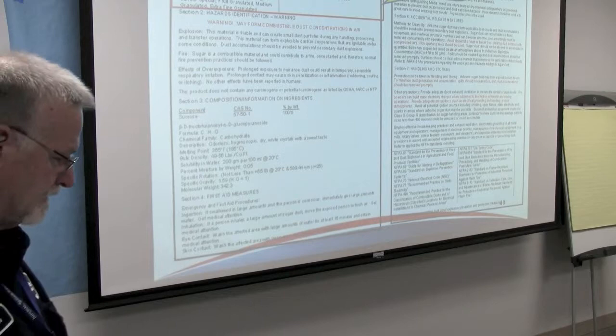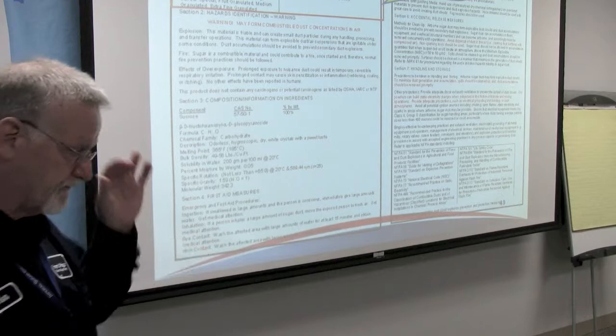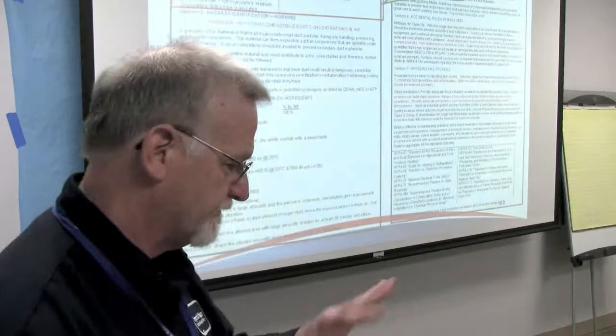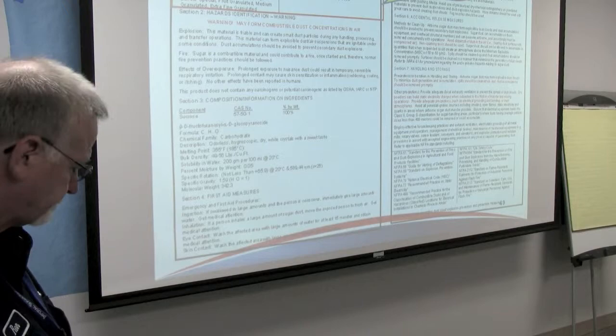One of ten new material safety data sheets that we've developed — it's not our intent today to go over all of these, but the one you've got is for granulated sugar. We broke these into ten families of products. We've got over 40 dry products, but some had combustible dust risks that were very similar, so we were able to group those. We've identified the products by name that are covered by each material safety data sheet.